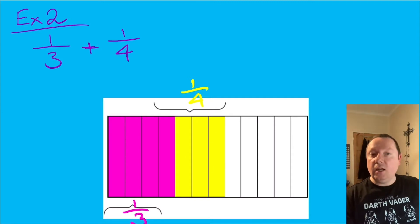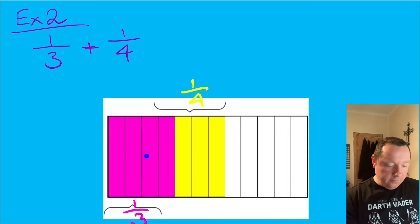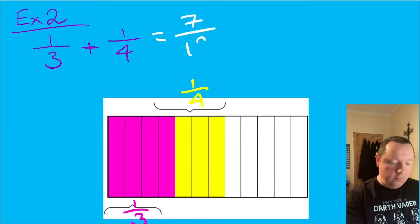Now I can just count how many pieces I've got out of twelve. Counting up: one, two, three, four, five, six, seven. So a third plus a quarter is seven out of twelve — seven twelfths.